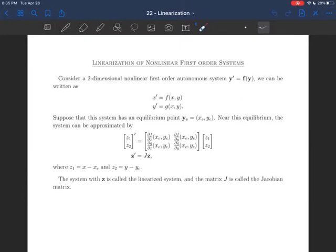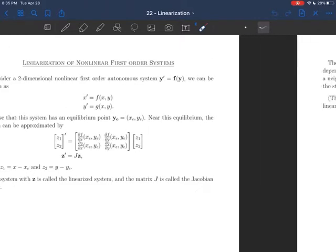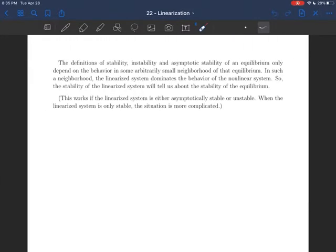So this is called the linearized system. This whole thing is the linearized system around this equilibrium. Each equilibrium will have a different linearization. So we have to do this Jacobian, this matrix J, for every individual equilibrium. So the matrix J is called the Jacobian matrix, and it is a very useful thing. There is an equivalent to this for systems of more equations. You just make a bigger linear system, and things work exactly the same. But we're going to stick with two by two for now.